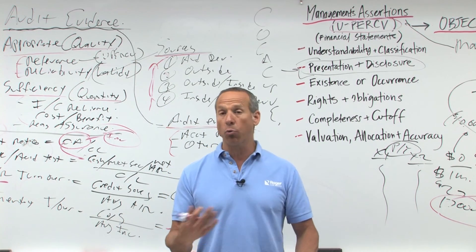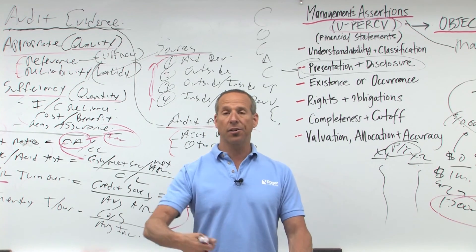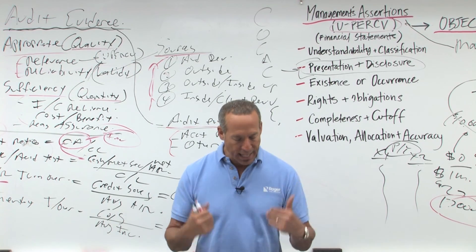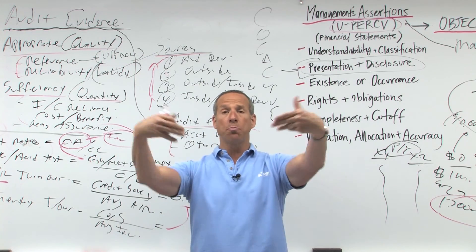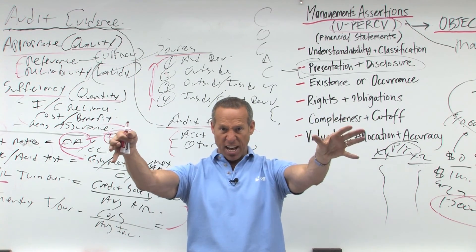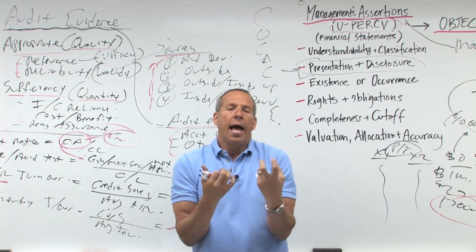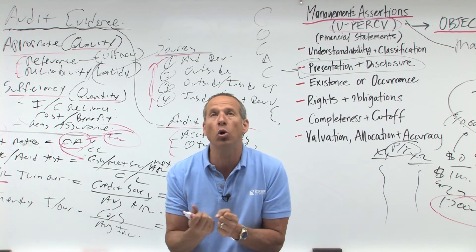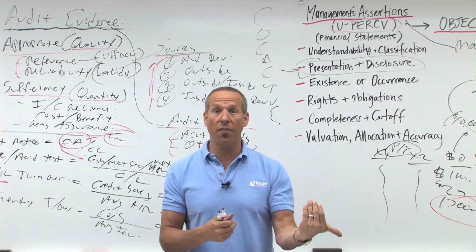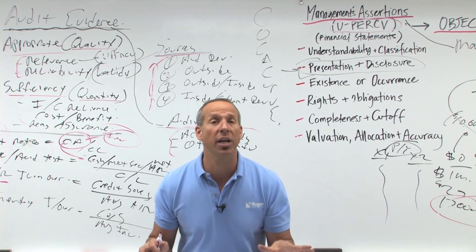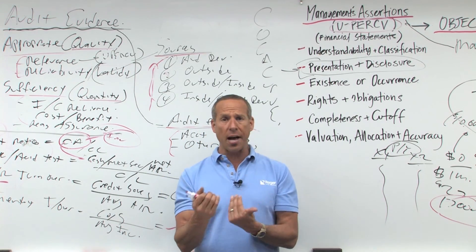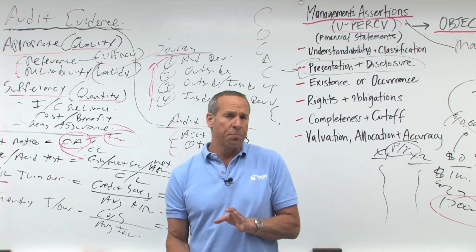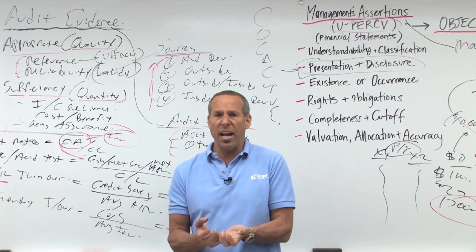Rate of return on common stock measures profitability of the owner's investment. EPS — earnings per share — measures net income earned on each share of common stock. We'll calculate both simple and diluted EPS in financial accounting. It doesn't mean how much money you're actually going to earn; it's not your dividend. Earnings per share says how much per share each person would have earned based on the company's earnings, not how much you're getting as a dividend.